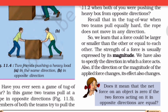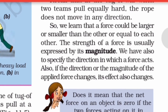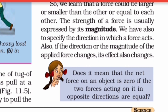A force can be larger, smaller, or equal to another force. The strength of a force is expressed by its magnitude. We must also specify the direction in which a force acts, because the object moves in that direction. If two equal forces act in opposite directions — say 10 newtons from the back and 10 newtons from the front — the net force is zero and there will be no motion.